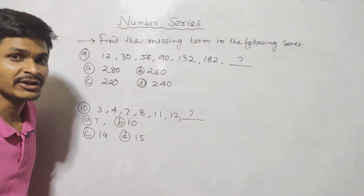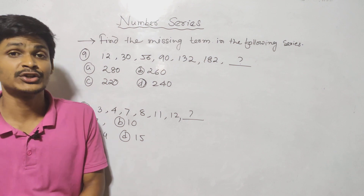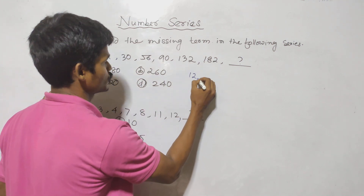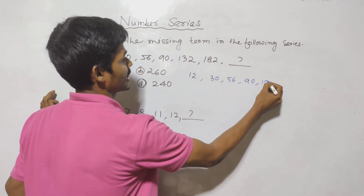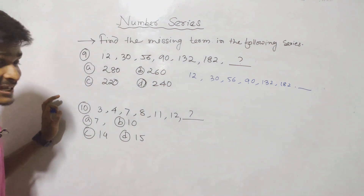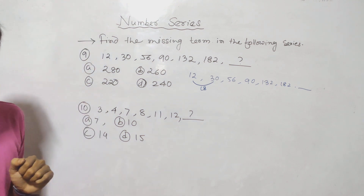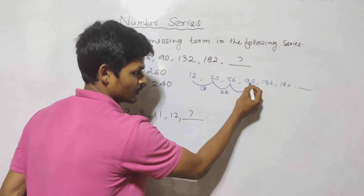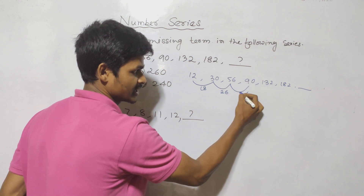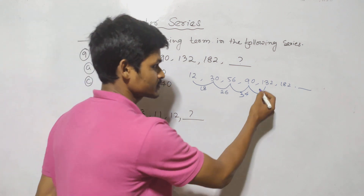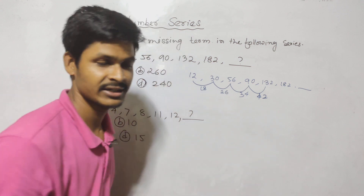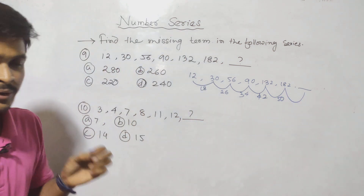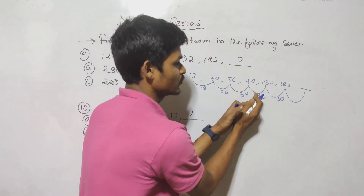Question number 9: 12, 30, 56, 90, 132, 182. The next number is the answer. We see the differences: 12 to 30 is 18, 30 to 56 is 26, 56 to 90 is 34, 90 to 132 is 42, 132 to 182 is 50. The second differences are constant at 8. So the next difference is 58, and 182 plus 58 equals 240.